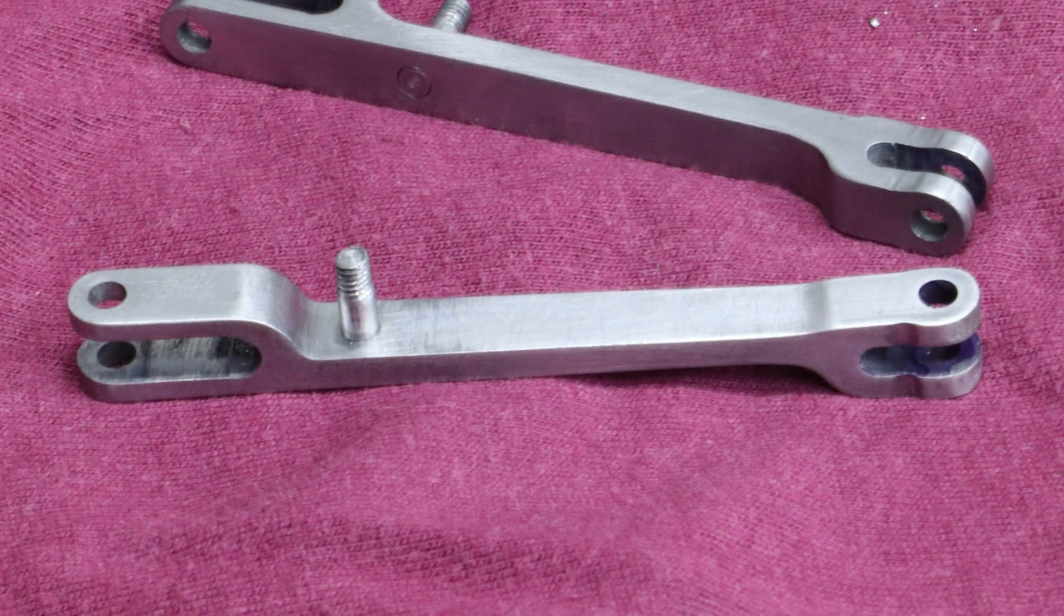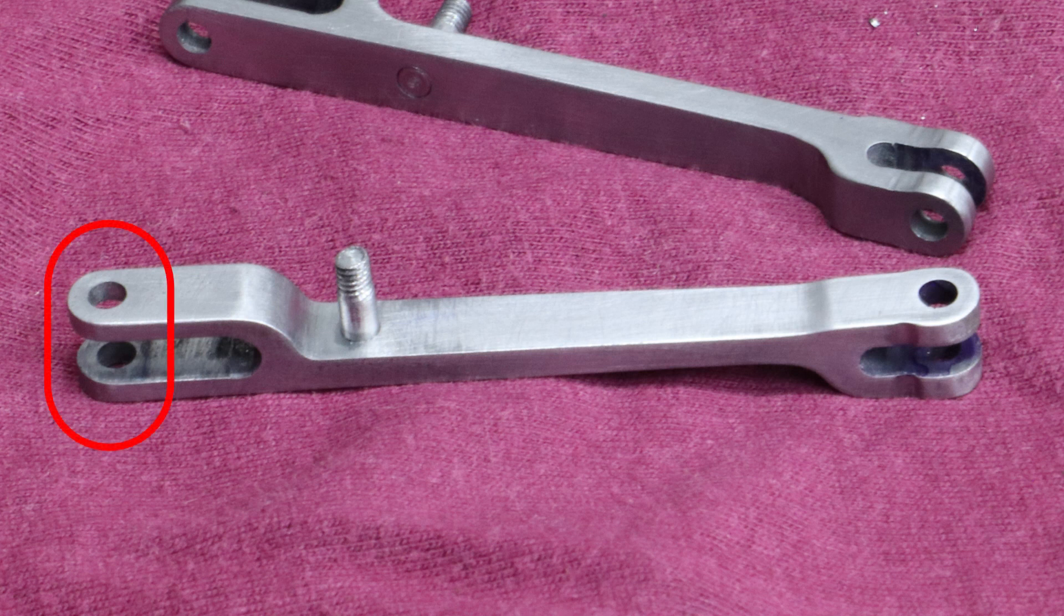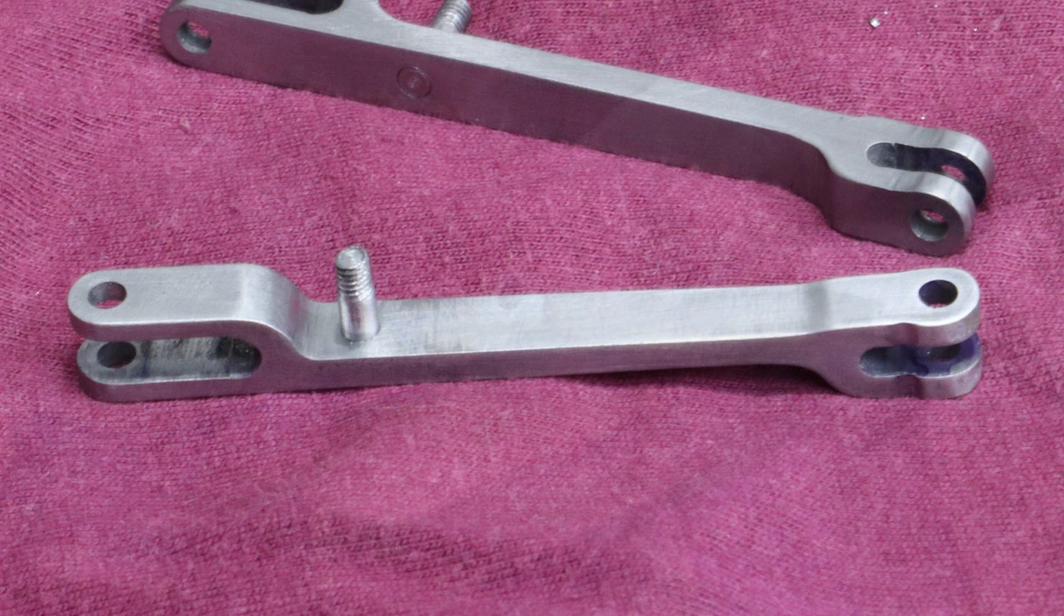Secondly, I can drill out the pivot pin holes in this end of the radius rod to 3.2mm and use a 3.2mm silver steel pin. That I don't particularly like because it means I've got two different sizes of pivot pins, which I will forget.